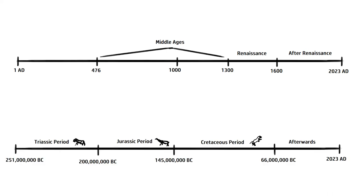Here we have another timeline with the prehistoric periods marked. So we have the Triassic period when dinosaurs roamed, the Jurassic period, the Cretaceous period, and the afterwards. So this timeline goes from 251 million BC to 2023 AD. This is another example of a timeline.